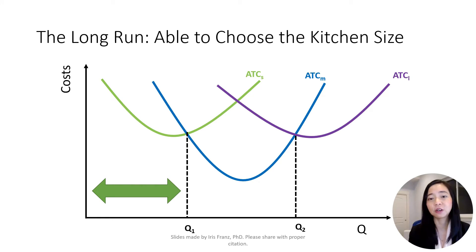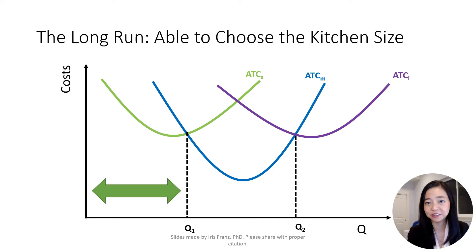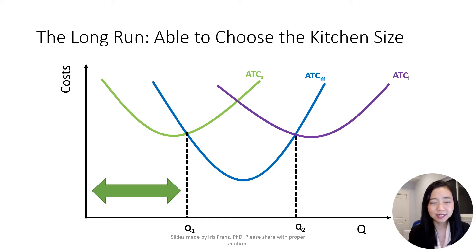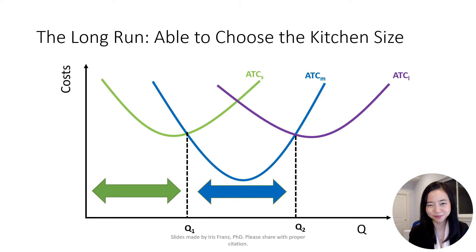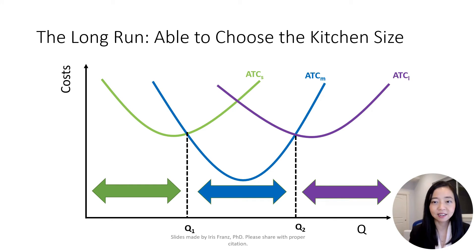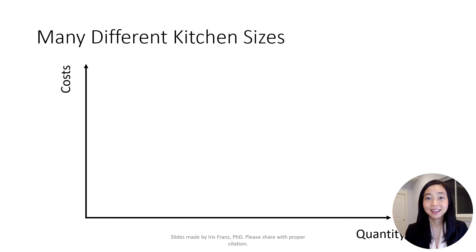Selecting a small kitchen results in the lowest average total cost, giving us ATCS. However, if we are producing a quantity between Q1 and Q2, we will select a medium-sized kitchen, as doing so results in the lowest average total cost — ATCM. Finally, if we are producing a quantity greater than Q2, we will select a large kitchen size and end up with ATCL.